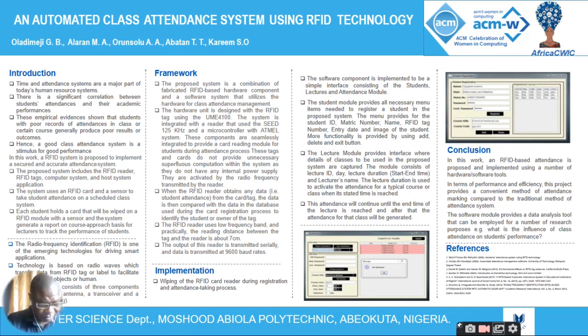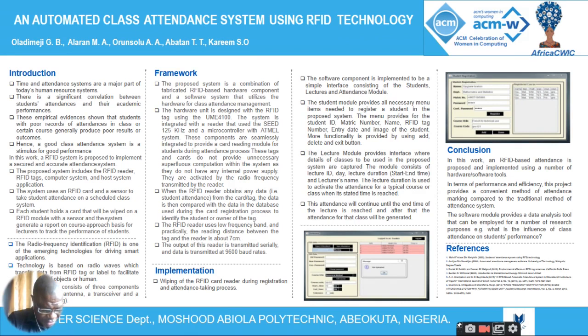RFID is one of the emerging technologies for driving smart applications. It is a technology based on radio waves which transfer data from a tag or label to facilitate identification of objects or humans. The RFID system consists of three major components: the antenna, the transceiver, and the transponder, which is the tag.